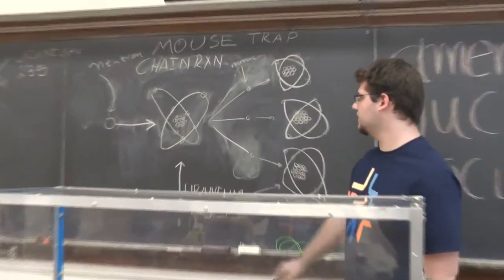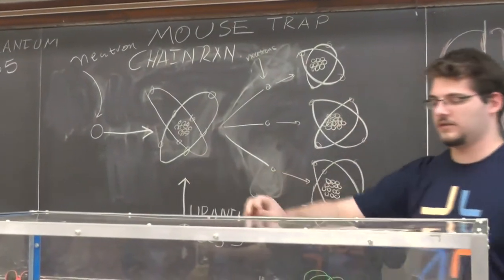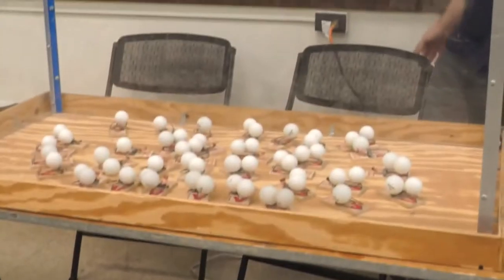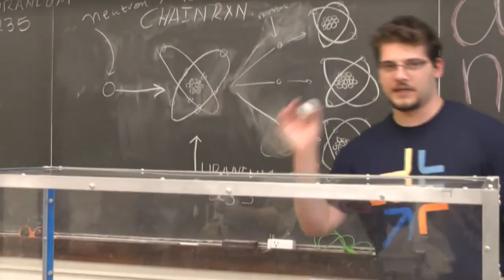So what we have is unstable uranium-235 atoms, which are supplied by the mousetraps, and we have neutrons which are supplied by the pink monkeys.